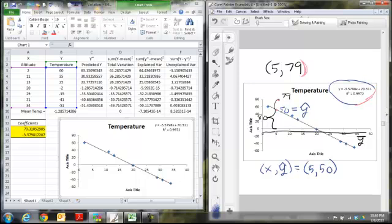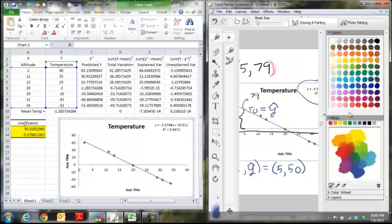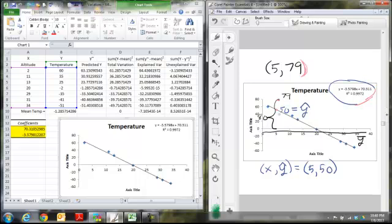So our best guess y bar, our actual observed y value, right, and the difference between those is 80. So that's the total variation for when x equals 5. Our point estimate of y bar is off by a distance of 80. Our line, our regression line, it accounts for some of that variation, that difference. Going from this bad guess to what it actually is, we get this distance here of 51. And that's the amount of variation that is explained by the model. The model can take this bad guess and get it closer to the actual observed amount.